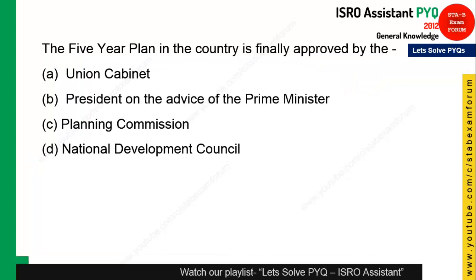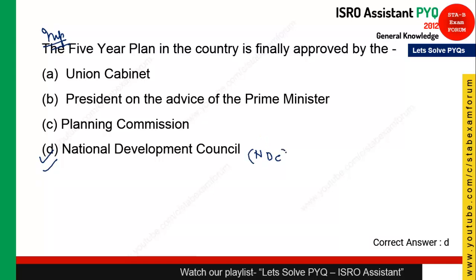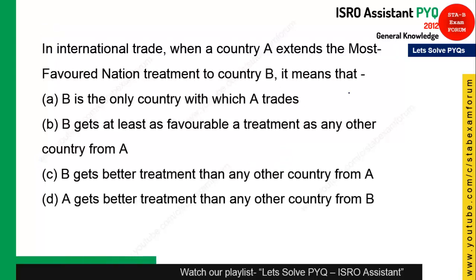The next question: the Five Year Plan in the country is finally approved by whom? The National Development Council (NDC) generally approves the Five Year Plan. Option D — National Development Council — is the correct answer.